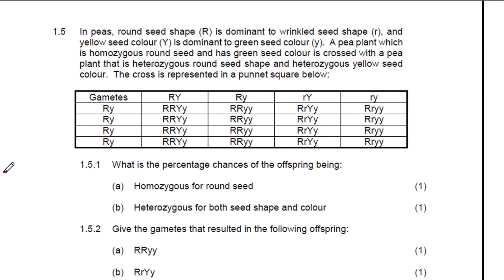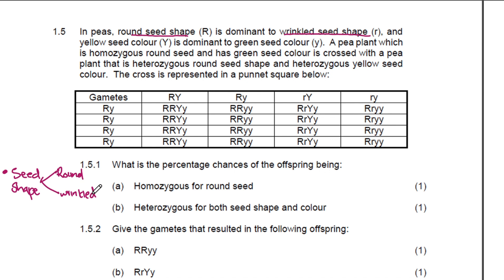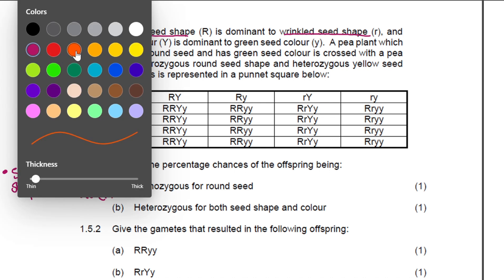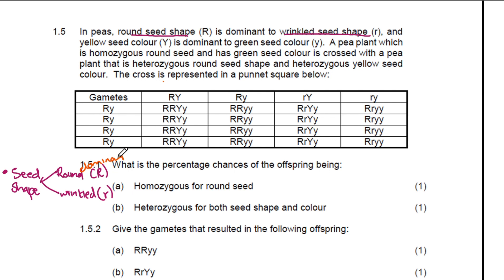So the first trait is seed shape. They're saying round seed shape is dominant over wrinkled seed shape. So that is our first trait — the seeds can either be round or wrinkled. They've given us the letter R: the round seed received a capital letter R and the wrinkled seed received a small letter R. That is telling us that the round seed shape is dominant over the wrinkled seed shape. The round seed shape gene is dominant and the wrinkled gene is recessive.